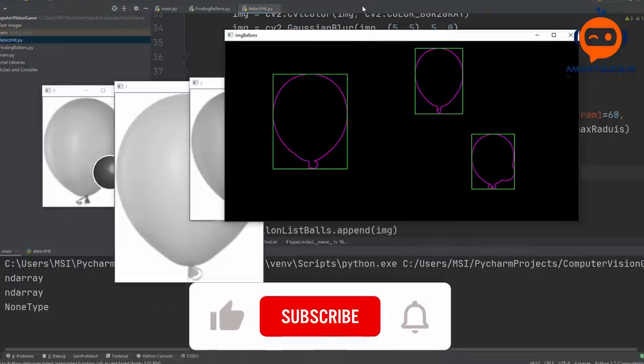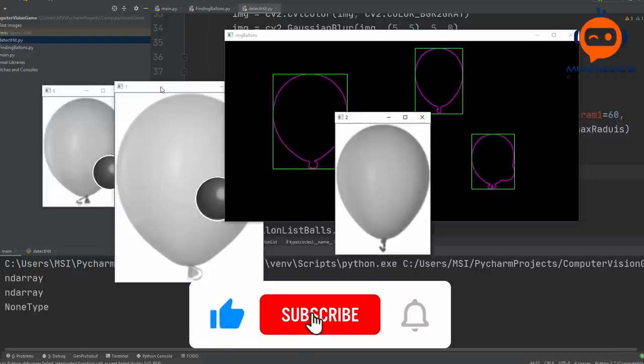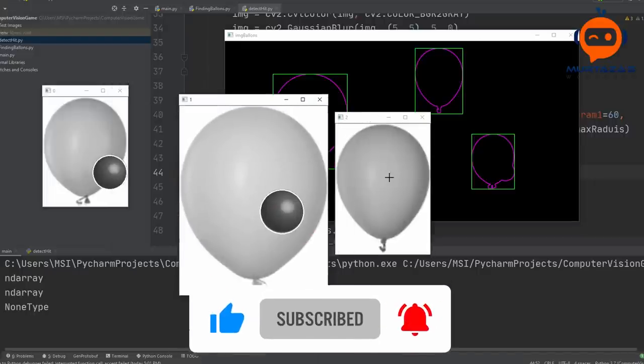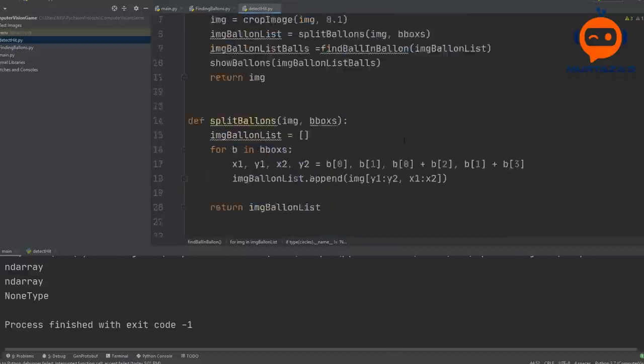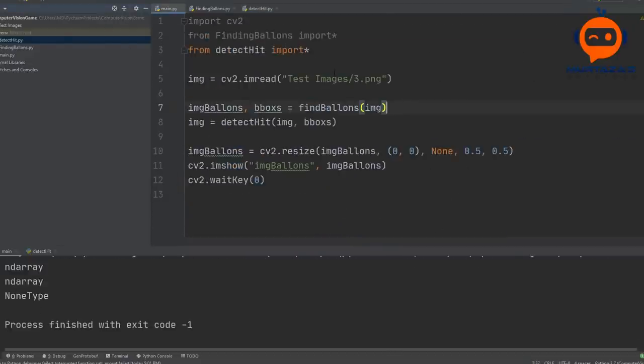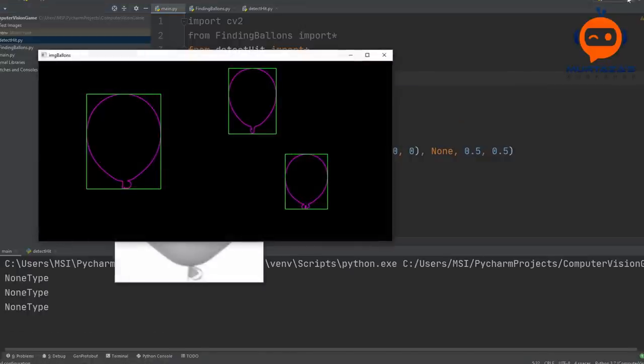First we crop the balloon regions based on the location provided by the balloon detection module. Now using this information, we find the circles within these images to detect the hit. Now this process requires a lot of tuning and I did not spend a lot of time here.